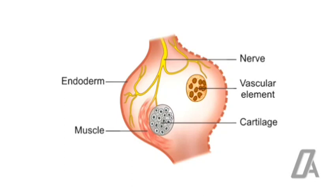Each branchial arch has four components: a central cartilage rod that forms the skeleton of the arch; a muscular component called the branchiomere; a vascular component consisting of an aortic arch artery running around the pharynx from the ventrally located heart to the dorsal aorta; and a nervous element consisting of sensory and special visceral motor fibers of one or more cranial nerves supplying the mucosa and the branchial muscle arising from that arch.